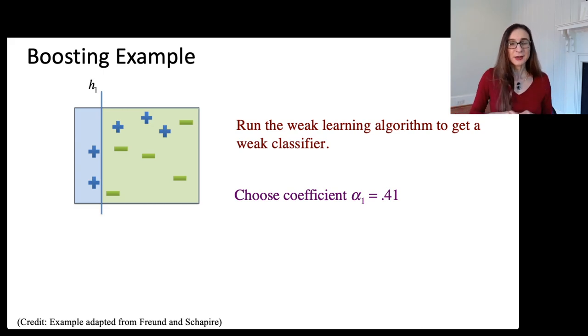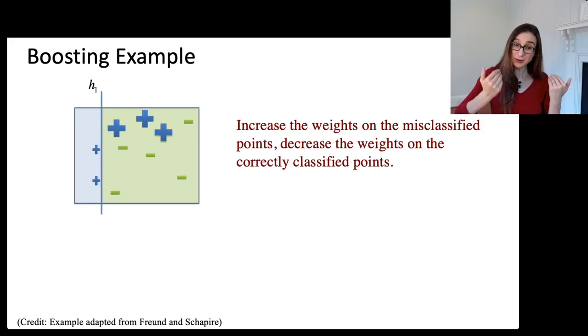Oh, before we do that, we're going to choose a coefficient for our final combined classifier. And that coefficient happened to be .41 and I'll tell you how we get that and I'll tell you the formula for that in a few minutes. So again, we're going to upweight those positives, the misclassified positives, and downweight everybody else. So, increase the weights on the misclassified points, decrease the weights on the correctly classified points.